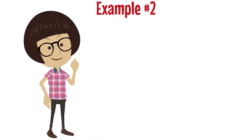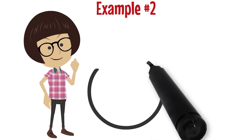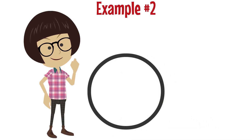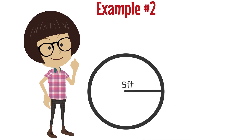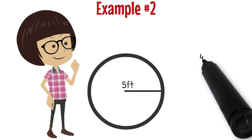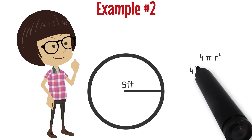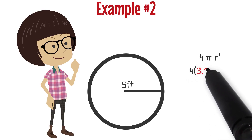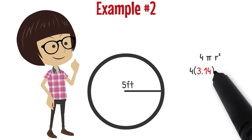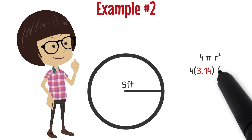Let's look at example number two. Samantha wants to calculate the surface area of a sphere that she needs to paint for a school project. The calculation will help her know how much paint she'll need to buy. The sphere has a radius of five feet. I'm going to start off by writing my formula: 4 pi r squared. Now I'm going to plug in everything I know. The 4 stays the same, the pi is 3.14, and the radius is 5.